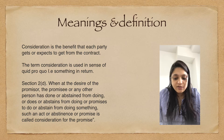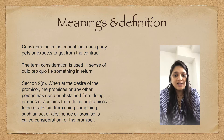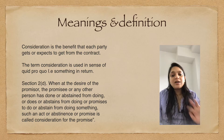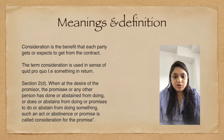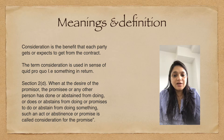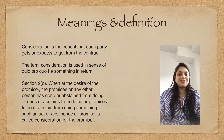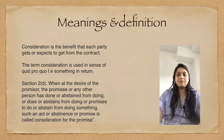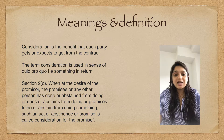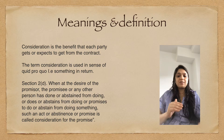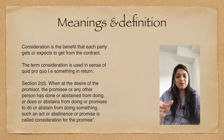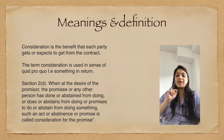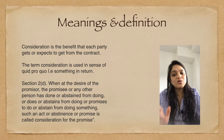The first definition is: consideration is the benefit that each party gets or expects to get from the contract. Consideration is the benefit that both parties receive from entering that contract. This benefit can be in any form — it can be monetary, it can be a material thing like receiving a car, or it can be abstinence, like someone wanting to file a defamatory lawsuit against you. You contract with them saying 'don't file the case, I will pay you this amount' — that is also a valid form of consideration, even though it is not cash or a material thing. Not doing something — that is, not filing the case — is also a valid consideration.